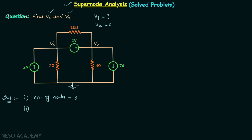We are left with 2 non-reference nodes. In the question, the voltages at the non-reference nodes are already assigned: this non-reference node has voltage V1 and this non-reference node has voltage V2. So we are done with step number 2.